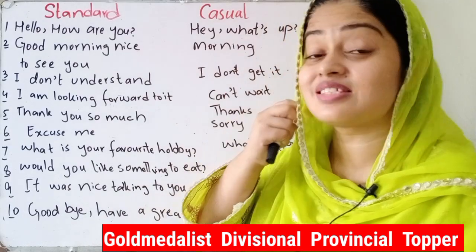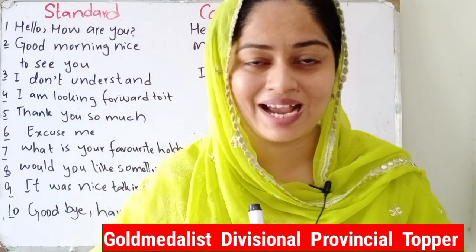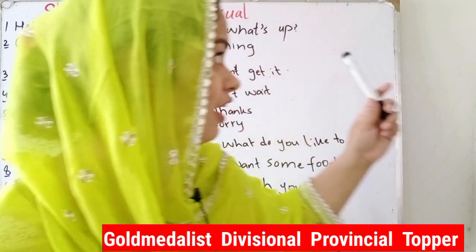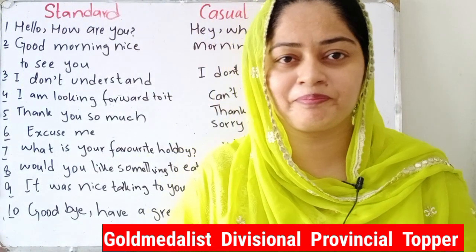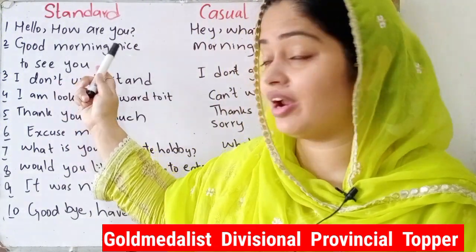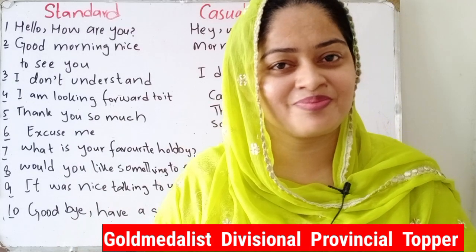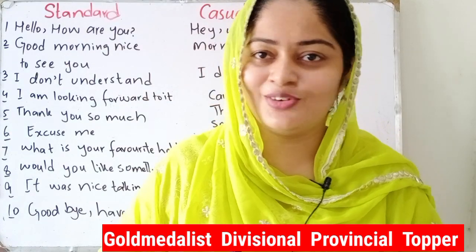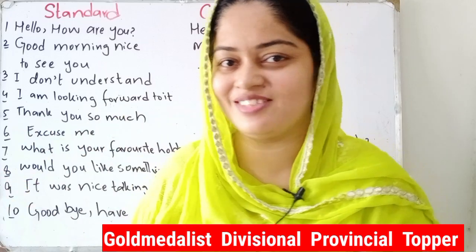What is the first standard sentence? 'Hello, how are you' — this is the standard or text English. The casual version is 'Hey, what's up.' Second: 'Good morning, nice to see you' is standard, and casual is simply 'Morning.' Don't say 'good morning, nice to see you' — just say 'morning,' very simple.